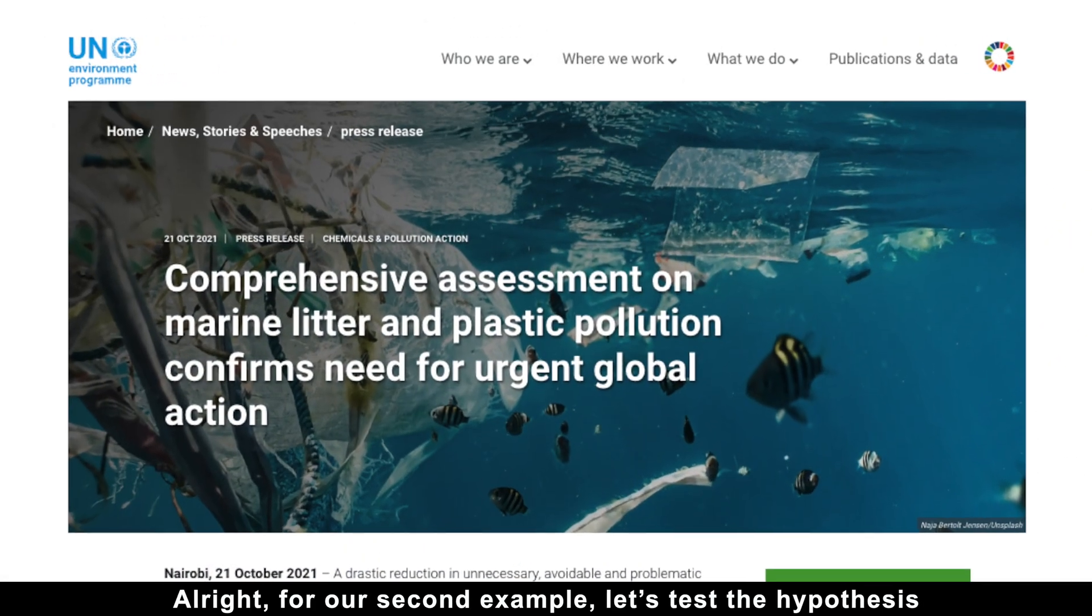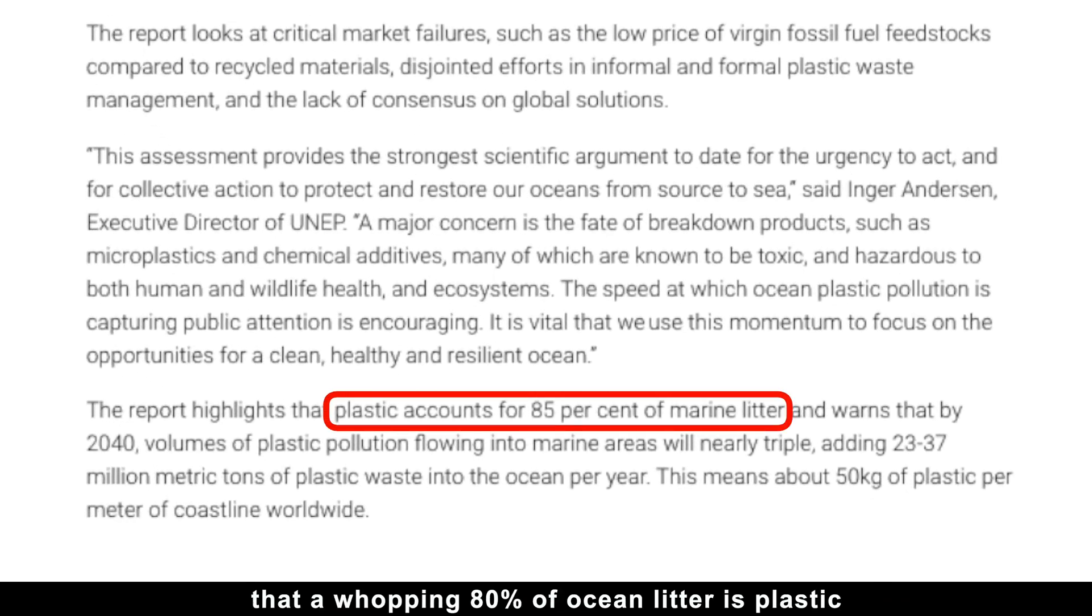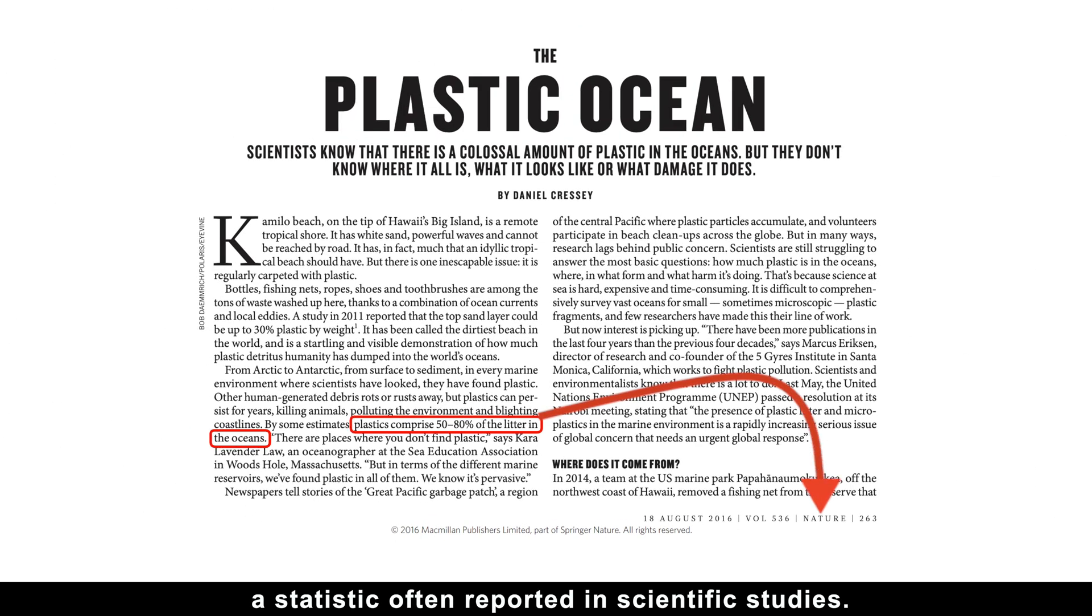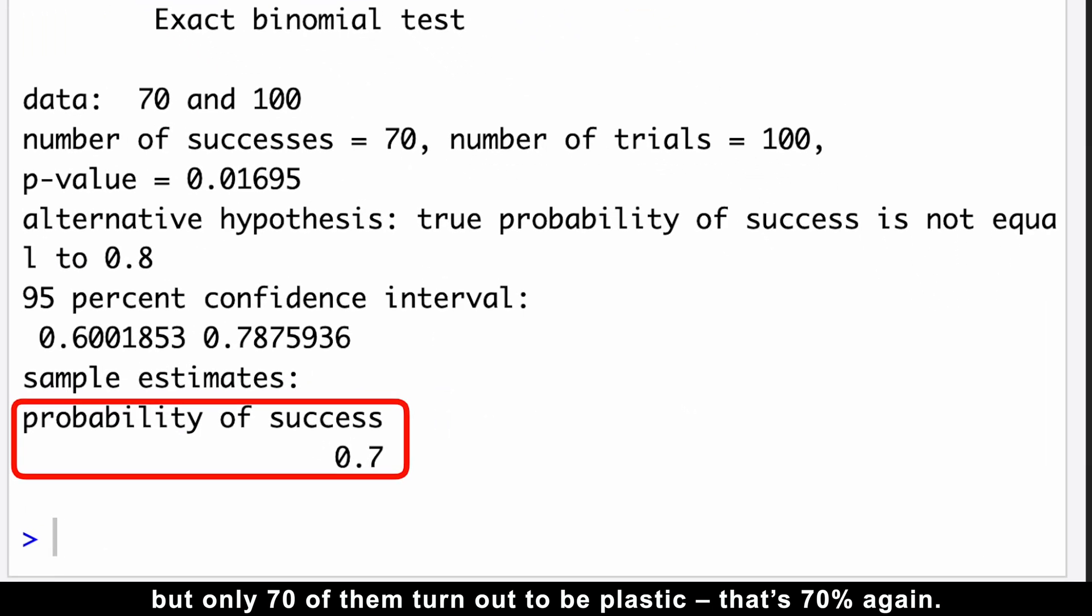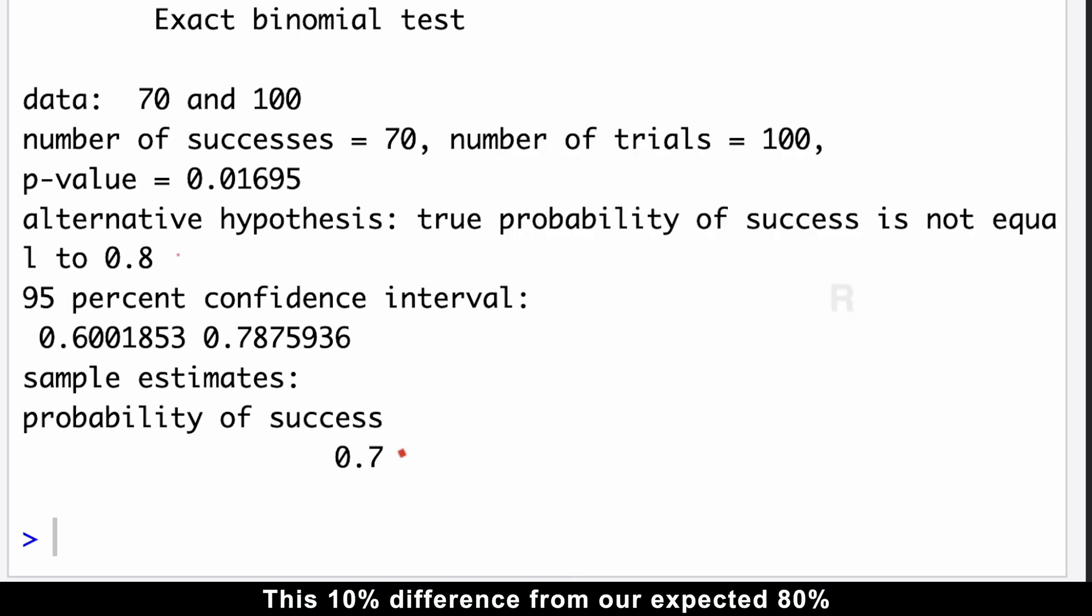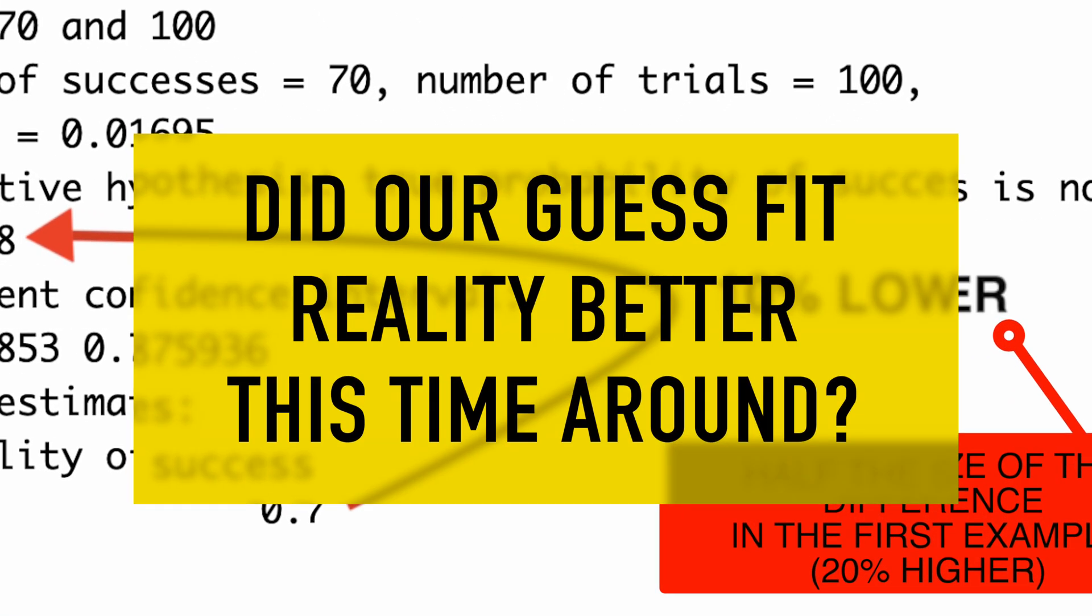Alright, for our second example, let's test the hypothesis that a whopping 80% of ocean litter is plastic, a statistic often reported in scientific studies. Imagine we go out and collect 100 pieces of trash, but only 70 of them turned out to be plastic. That's 70% again. Interesting. But here is the twist. This 10% difference from our expected 80% is actually half the size of the difference in the first example. So did our guess fit reality better this time around?